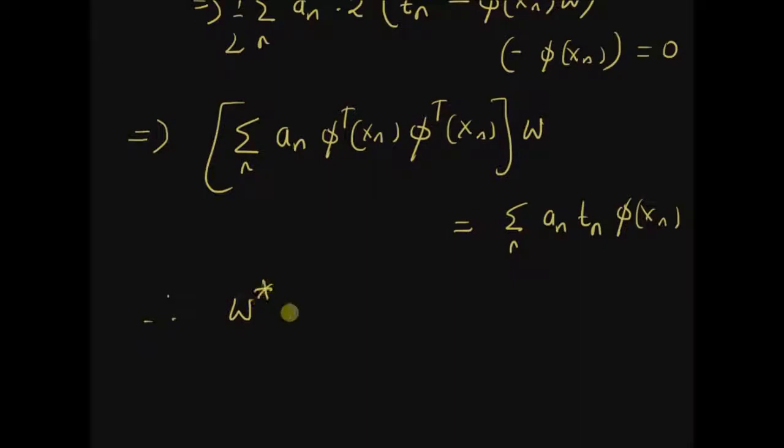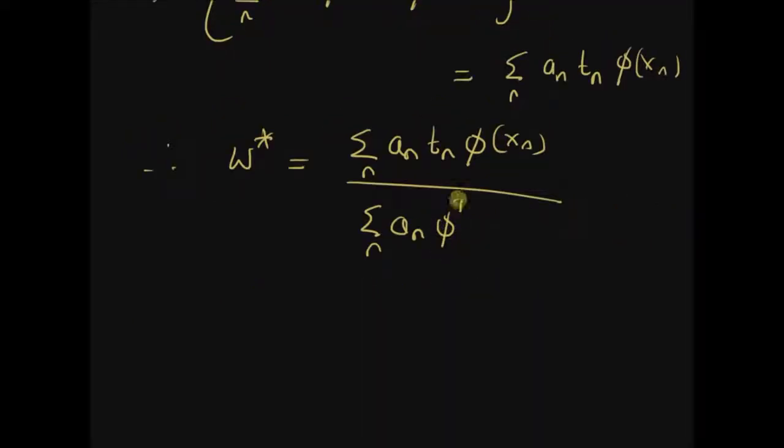the optimal solution w* is given by the sum a_n t_n phi(x_n) over the sum a_n phi transpose (x_n) into phi(x_n). And since this product is a scalar, the denominator must be a scalar.